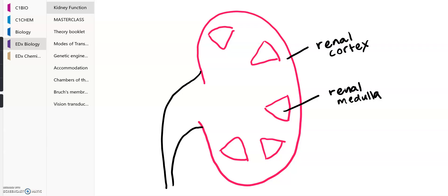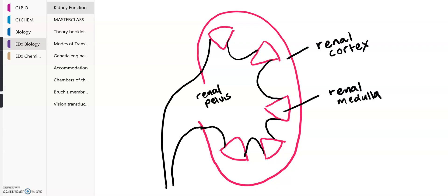As you recall, the renal medulla transports the waste products of blood into a common collecting duct called the renal pelvis. This urine is then transported down a tube known as the ureter, where it connects to the bladder before moving out through the urethra. It's also important to note that even outside of the renal cortex, we have a translucent fibrous capsule called the renal capsule.